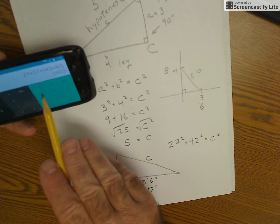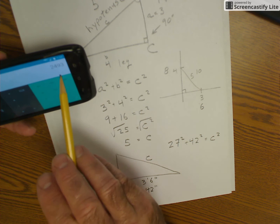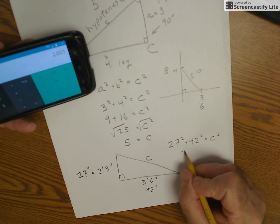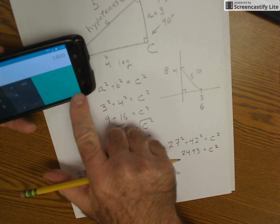So then I have 27 squared plus 42 squared is equal to 2493. So this is 2493 equals c squared, square root of both sides.